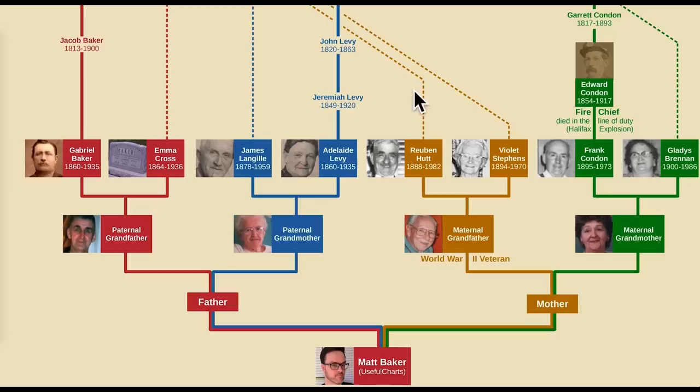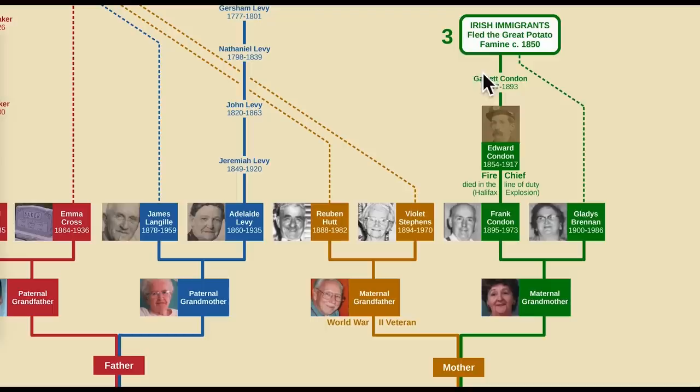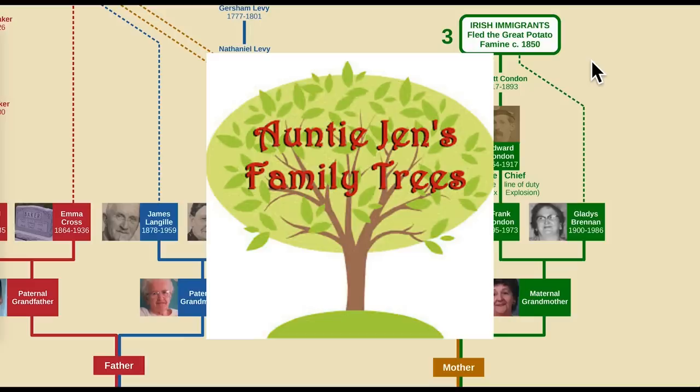My father then met my mother, whose father's ancestors had also come from Tancook, but whose mother's ancestors had a different story. This brings us to the third and final migration story. If you're interested in German migration to North America, check out the video by the channel Auntie Jen's Family Trees, linked in the description.